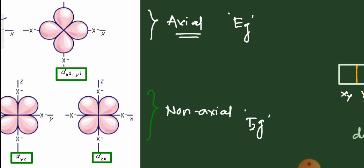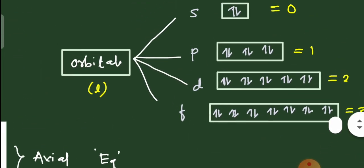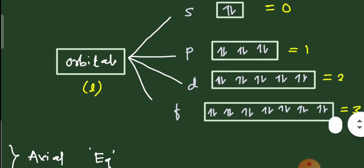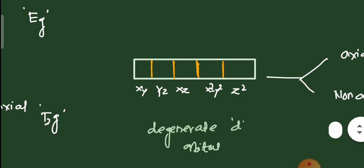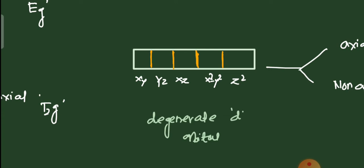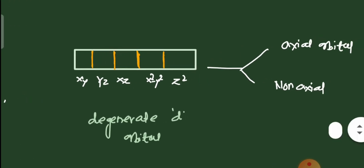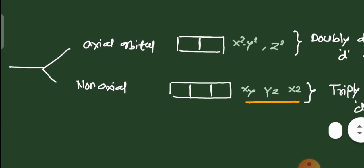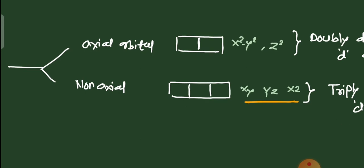The 'g' in eg and t2g stands for 'gerade' from Greek, meaning centrosymmetric. D orbitals are centrosymmetric, just like s orbitals, so we use the term 'g'. There are five total d orbital sets; when all five are at the same energy level they are called degenerate orbitals. The axial set contains two orbitals (dx²-y² and dz²) — doubly degenerate — while the non-axial set contains three orbitals (dxy, dyz, dxz) — triply degenerate.